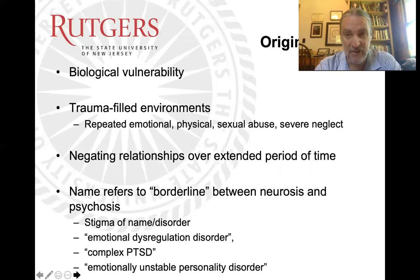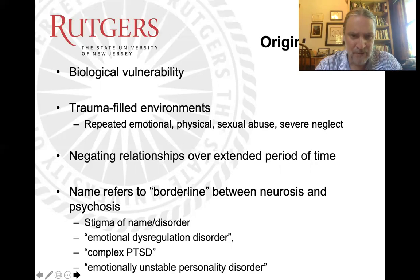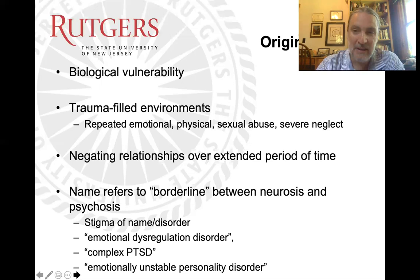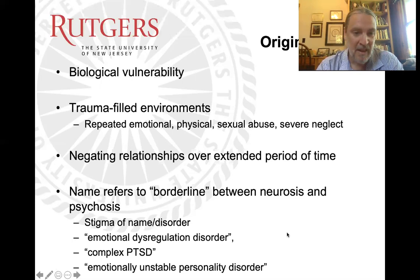Very often, borderline personality disorder comes from trauma-filled environments: a history of severe physical abuse, severe sexual abuse, severe neglect. It's created in a very pressure-filled environment — that hole was put there through negating relationships. I always wondered why it was called borderline personality. The answer is it was the borderline between neurosis and psychosis. It was so severe it was judged more severe than depression or anxiety, but it didn't exhibit quite as profound an alteration in reality testing as the psychotic disorders did. That's where the name comes from.